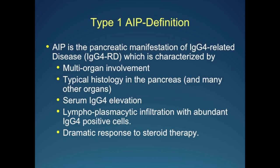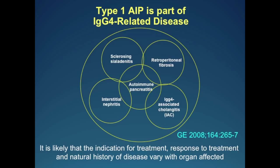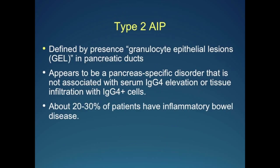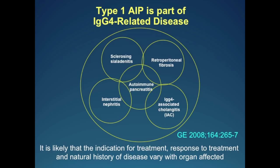While I put autoimmune pancreatitis as the center of the universe of IgG4-RD, that's clearly not true. If you were a rheumatologist seeing patients with sialadenitis, you would put sialadenitis at the center because you see that as the most common manifestation of the disease. I'm not sure whether the indication for treatment, response to treatment, or natural history will vary depending on which organ is involved, but probably that is true.